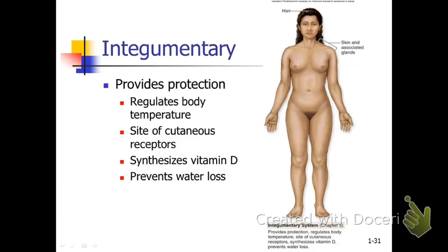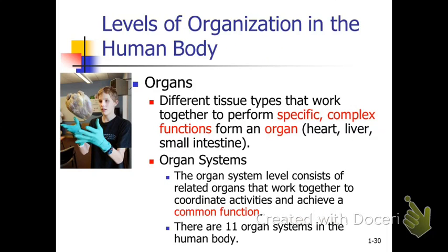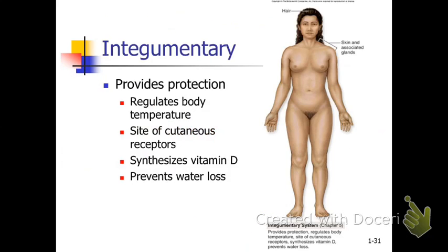We'll be studying those different organ systems as we go through the course — 11 systems, or actually 12, because there are two reproductive systems. So let's go through these body systems.